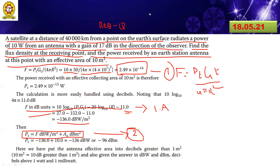So finally you got F equals minus 136 decibels per square meter. Now substitute this into the PR expression. So PR equals F plus effective area. Substituting the previous solved data into the PR expression gives the final result.